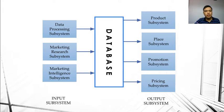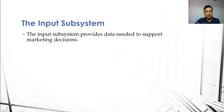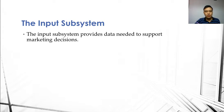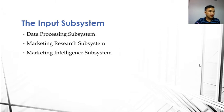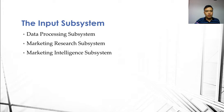Let's talk about this figure, which shows the different subsystems in a marketing information system. These are the input subsystems. The input subsystem provides data needed to support marketing decisions. Data immediately accessible to the company, such as those regarding salesperson sales and products, and data from the environment such as those about customers and competitors, are gathered by different subsystems within the input subsystem. These subsystems are called the data processing subsystem, the marketing research subsystem, and the marketing intelligence subsystem.